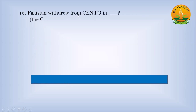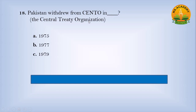Pakistan withdrew from CENTO (the Central Treaty Organization) in: Option A, 1915; Option B, 1917; Option C, 1979. Answer: C — 1979.